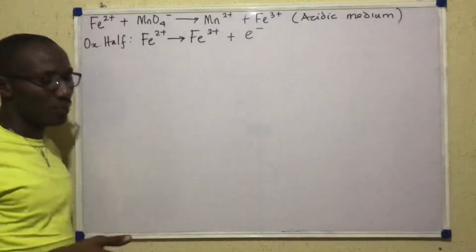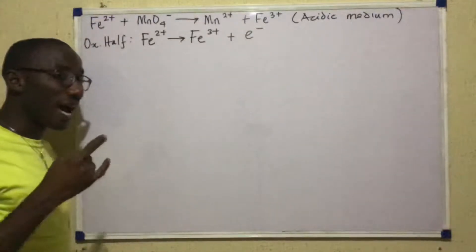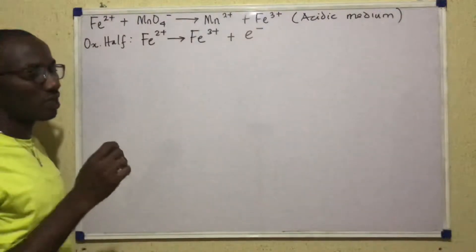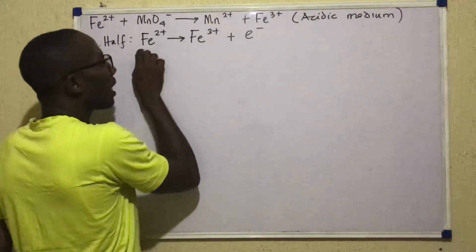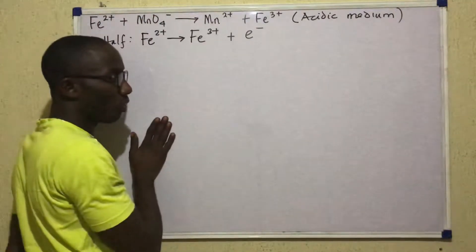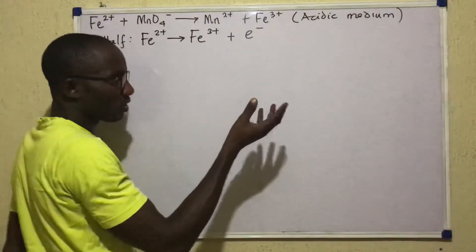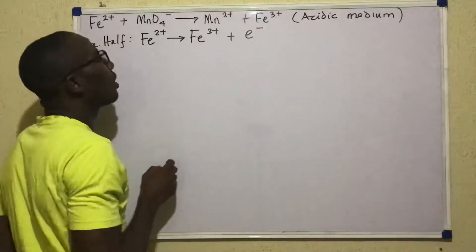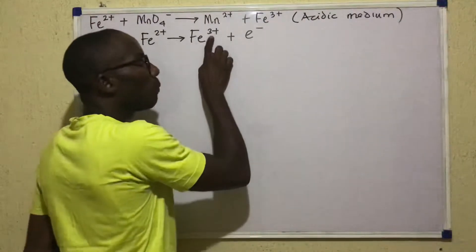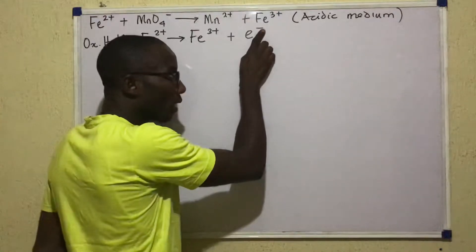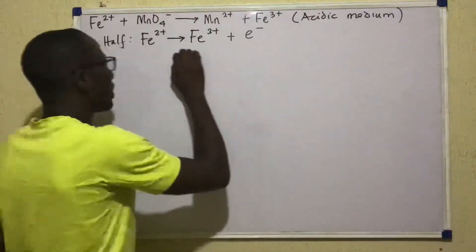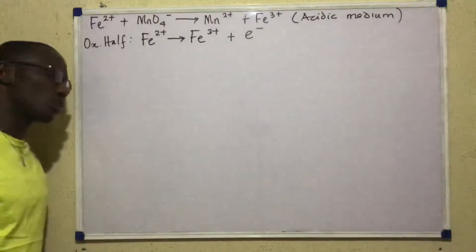Having written down the oxidation half, I'll quickly check whether it is balanced. First, check atoms — then check charges on left and right to see they are the same. On the left, one Fe ion; on the right, one Fe ion — atoms are balanced. For charges: on the left, +2. On the right, +3 plus −1 gives +2. So left equals right — the oxidation half is balanced.